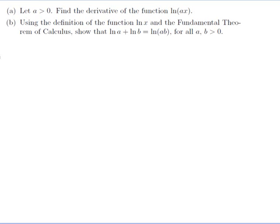Let a be greater than zero. Part a: find the derivative of the function ln(Ax). Part b: using the definition of the function ln(x) and the fundamental theorem of calculus, show that ln(A) plus ln(B) is equal to ln(AB), for all a and b greater than zero.